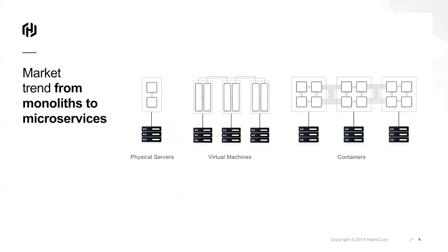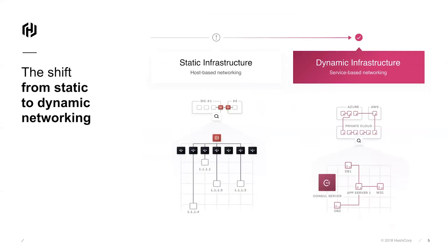A trend we are seeing during this transition to dynamic infrastructure is where developers are beginning to break down larger monolithic applications into smaller microservices. This can help increase agility and reduce the blast radius during aggressive release cycles. This trend is happening in parallel with the transition from static long-lived physical servers or virtual machines into short-lived containers or ephemeral cloud instances. Going through this transition to ephemeral workloads really drives the need for dynamic networking. Consul allows you to move away from host-based networking with high-trust network perimeters and long-lived IP addresses, moving towards tracking services using their identities.